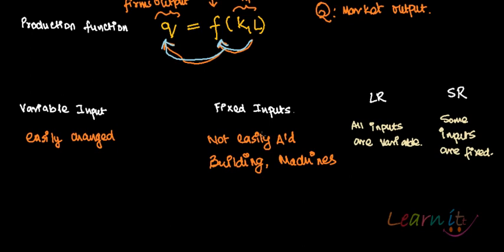This leads to the discussion of long run versus short run. The long run is that period of time in which all inputs are variable — over a sufficiently long period, you can change buildings and machines. Labor is, of course, always variable. The short run is that period of time in which some inputs, such as buildings and machines, are fixed and cannot be changed.